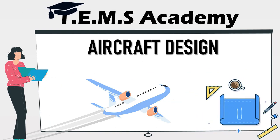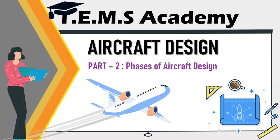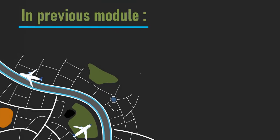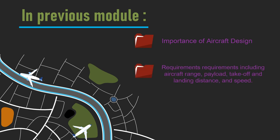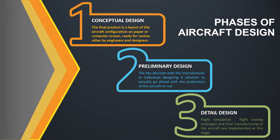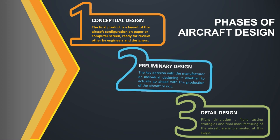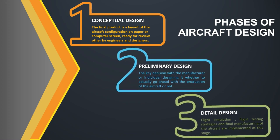Hello friends, welcome to Aircraft Design Course Part Two. In the previous lecture, you understood the importance of design — design must begin with requirements, whether it's a small aircraft, fighter aircraft, or even a passenger aircraft. There are three phases of aircraft design: first, conceptual design; second, preliminary design; third, detailed design — and finally, this leads to fabrication.